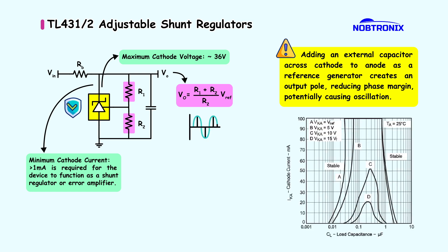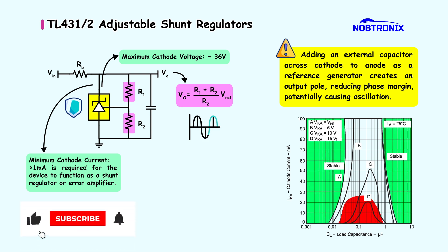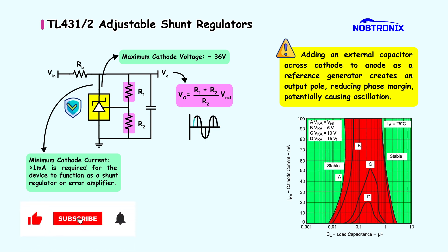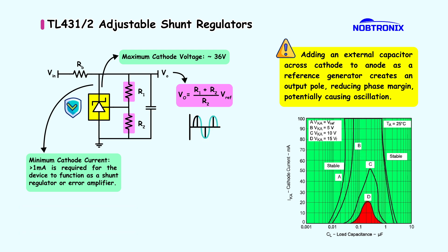The acceptable range of capacitance value depends on the cathode voltage, as shown in the TL431 stability charts. Increasing the cathode voltage generally expands the stability region.